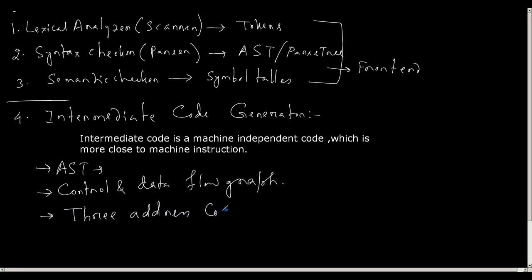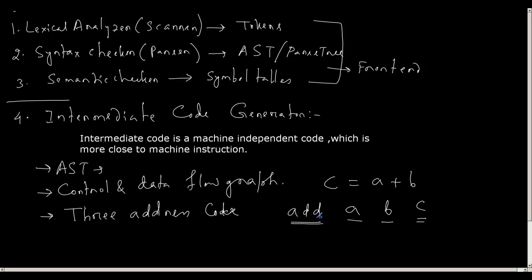Three-address code is very similar to a MIPS instruction, that is an assembly instruction. For example, if I write in high-level language C equals A plus B, then the corresponding three-address code will be: operator ADD, first operand A, second operand B, and the result stored in variable C. It is also known as a quadruple because it is a four-tuple. The job of the intermediate code generator is to take the AST and the symbol table and generate these three-address codes.